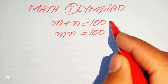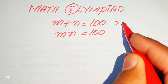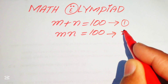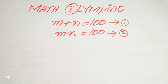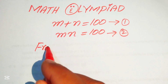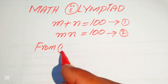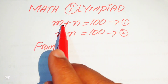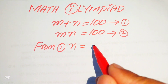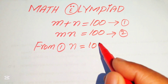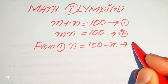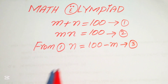The very first step we are going to do is label these as equation number one and equation number two. So first we focus on equation number one, and from equation number one we move m to the right hand side and we get the value of n equals to 100 minus m, and we call this equation number three.